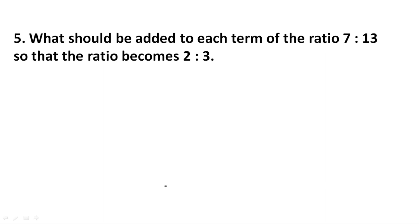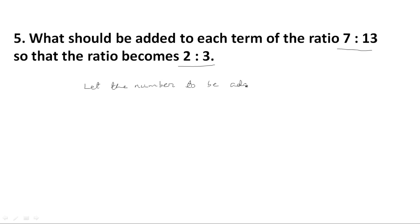Question 5: What should be added to each term of the ratio 7 is to 13 so that the ratio becomes 2 is to 3? We need to find what should be added to the ratio 7:13 to make it 2:3. Let the number to be added be x.